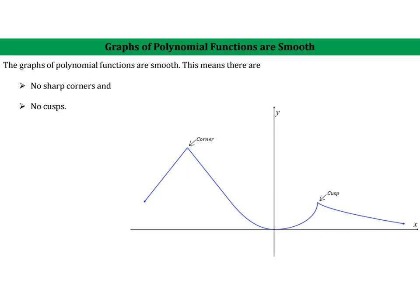Whenever we go to graph our polynomial functions, we will want to keep these two things in mind: that our functions are continuous and they are smooth. Just so you know, if you were to go on in math, the idea of smoothness is a mathematical concept that would require a more precise definition.